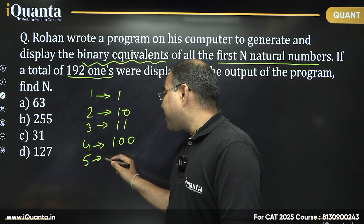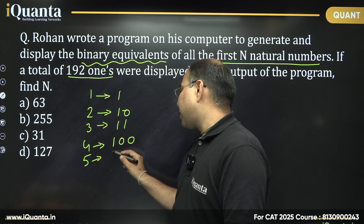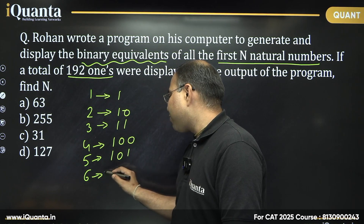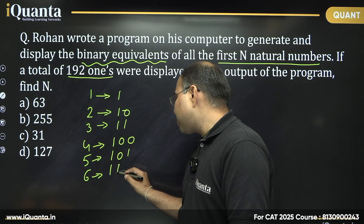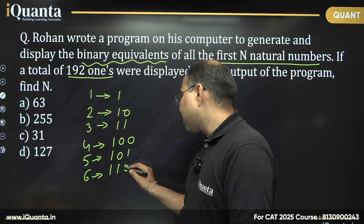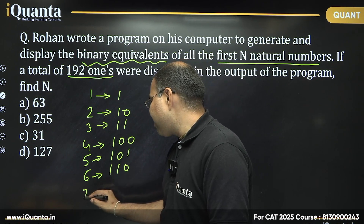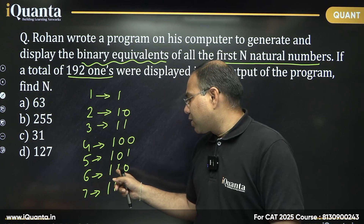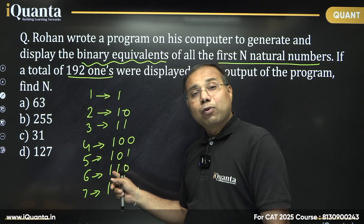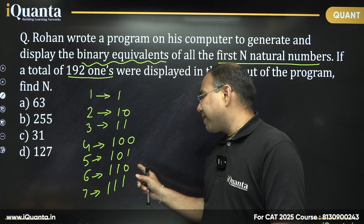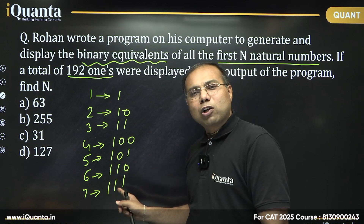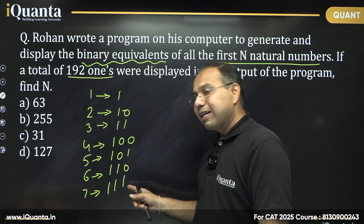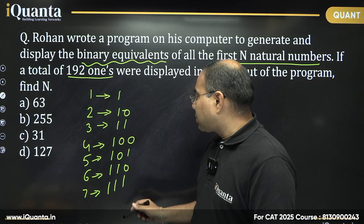We are not going to write all numbers individually. So continuing: 5 is 1, 0, 1; then 6 is 1, 1, 0; and 7 is 1, 1, 1. You can check: 1 group of 4 and 1 group of 2 gives 6; and 1 group of 4, 1 group of 2, and 1 single gives 7. So 4, 5, 6, and 7 are all 3-digit numbers in binary.